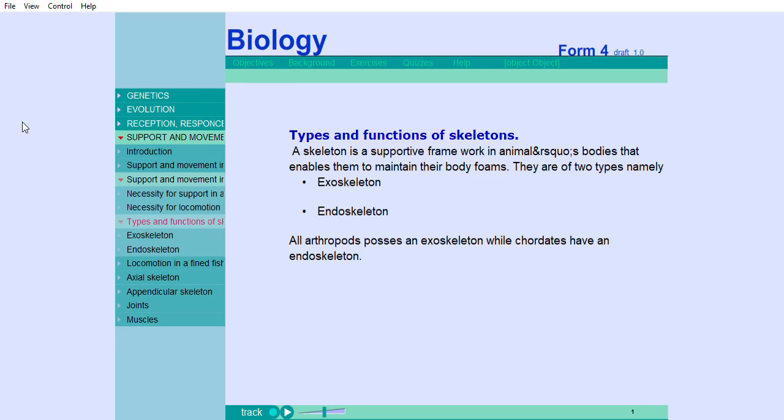All arthropods possess an exoskeleton, while chordates have an endoskeleton.